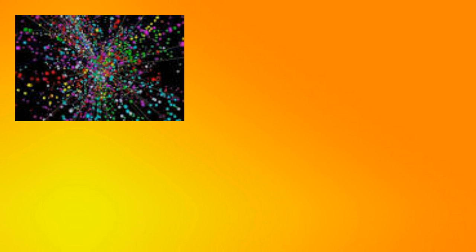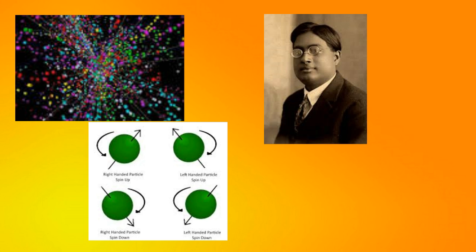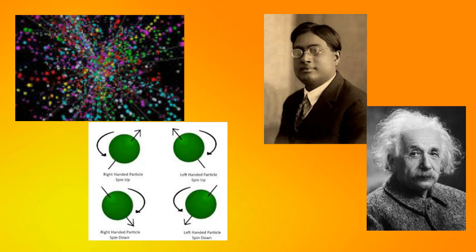A boson is a subatomic particle, such as a photon, that has zero or integral spin and fits the description given by S.N. Bose and Albert Einstein — who invented the Bose-Einstein Condensate, or at least came up with it — in 1924 and 1925.